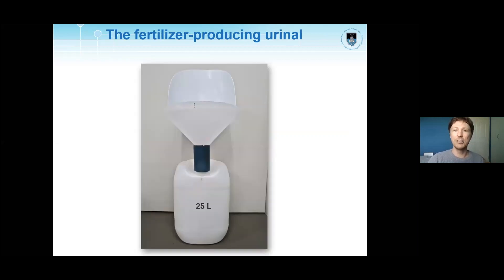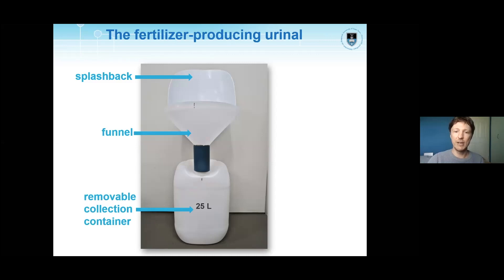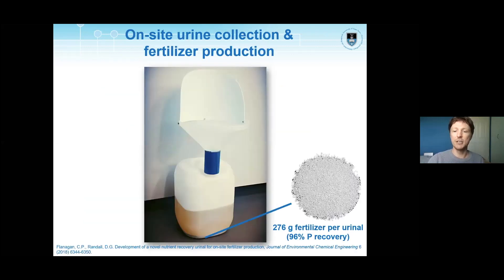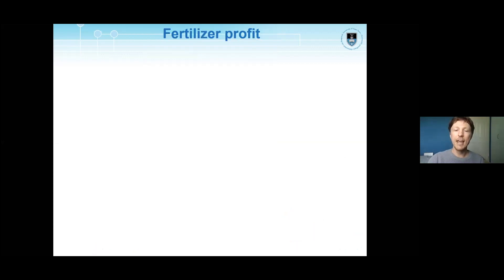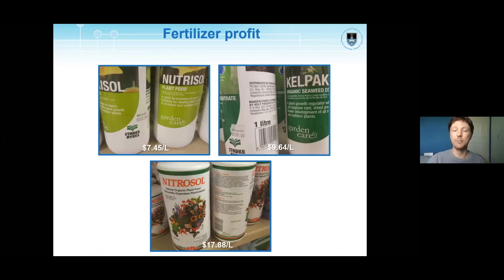This allowed us to develop a fertilizer-producing urinal. It consists of a removable container and a funnel with a splashback to which we add the calcium hydroxide, and then you simply add your urine. From each 25-liter container, we can produce about 280 grams of fertilizer with about 96% phosphorus recovery in the form of calcium phosphate. We are now looking at making liquid fertilizer from the treated urine and selling it as a high-grade fertilizer product.